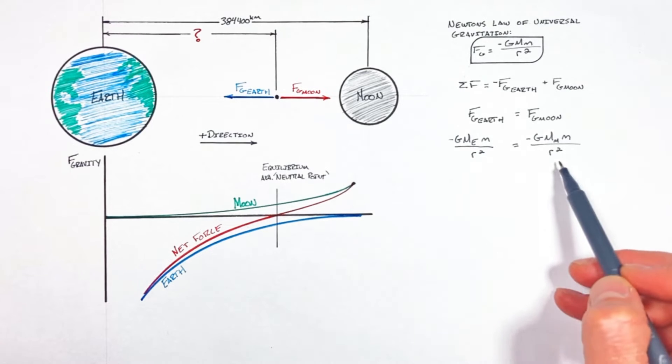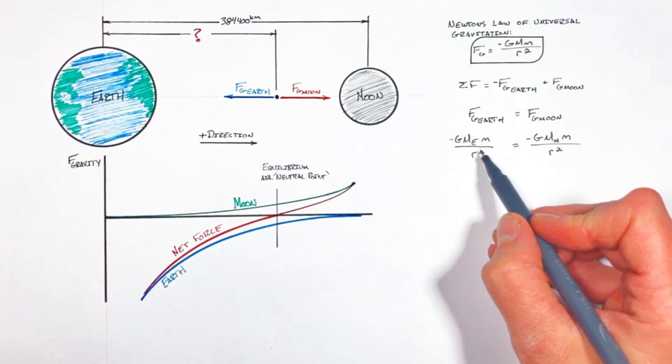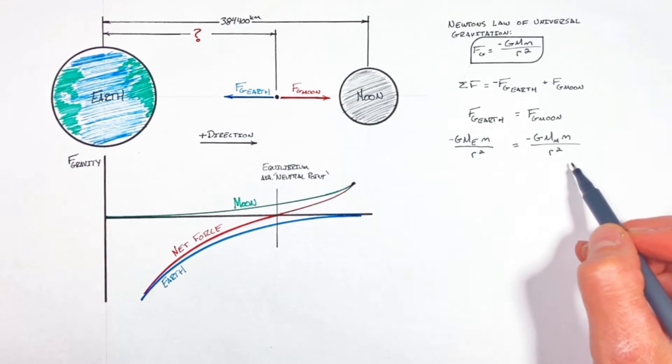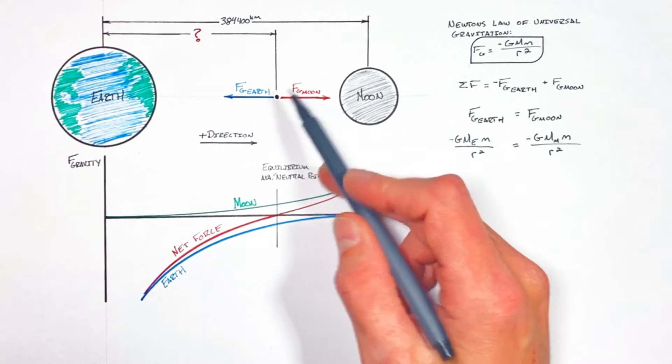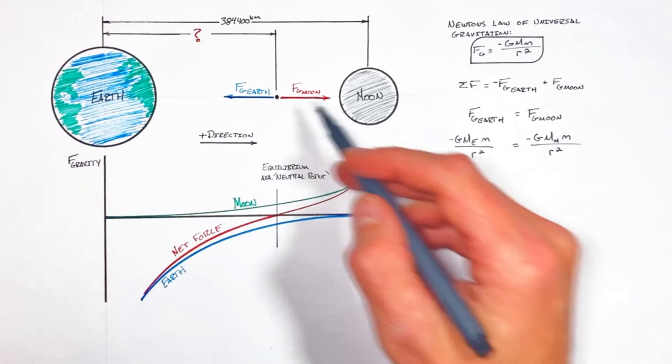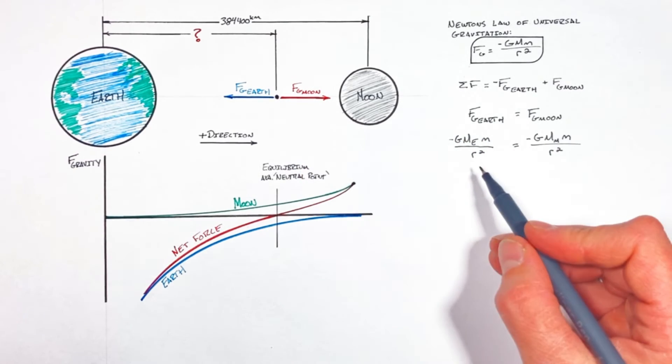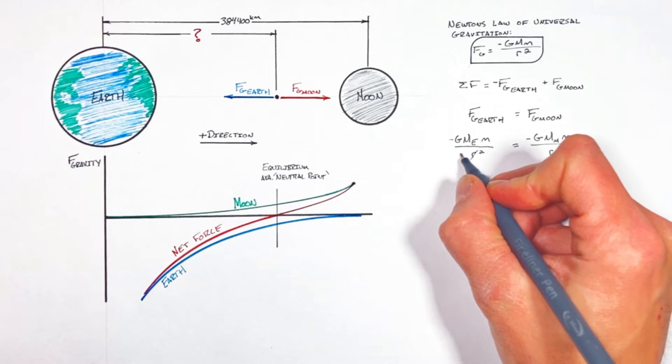And this is really where we have to start being careful in how we solve this problem. You see, these two radii are not the same. This radius right here is telling us the distance between the Earth and the ship, whereas this radius over here is the distance between the Moon and the ship. So if this radius is the distance to the Earth.